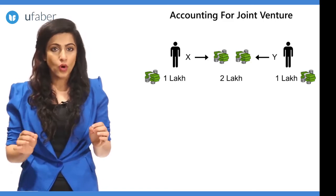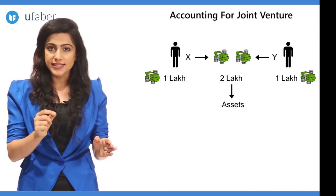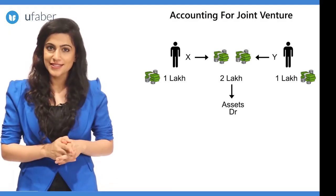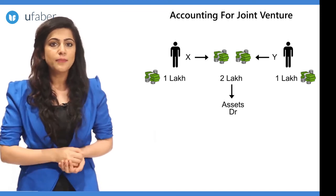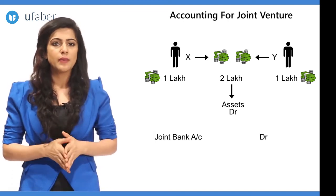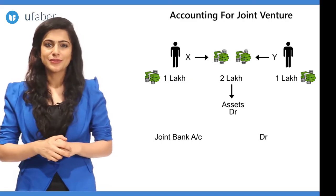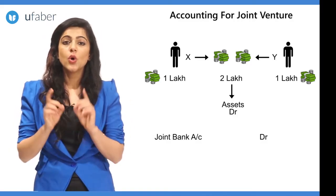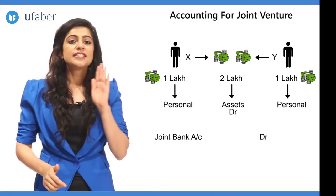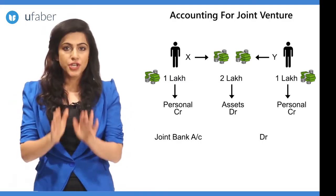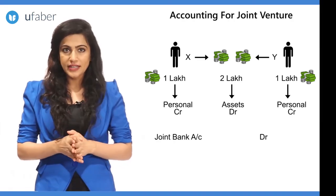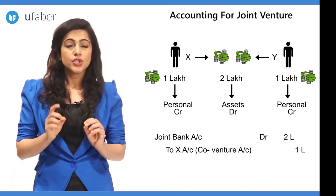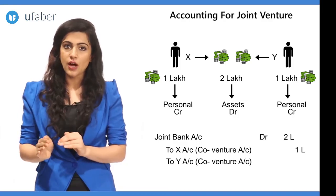The amount being brought in is an asset. The golden rule for an asset or real account is: debit what comes in, credit what goes out. Hence, we debit joint bank account — we cannot debit cash as we have opened only the joint bank account. The amount has been brought in by X and Y, both of whom are persons. The golden rule for the personal account is: debit the receiver, credit the giver. So the journal entry is: Joint Bank Account debit Rs. 2 lakhs; to X's account (co-venturer account) Rs. 1 lakh; to Y's account (co-venturer account) Rs. 1 lakh.